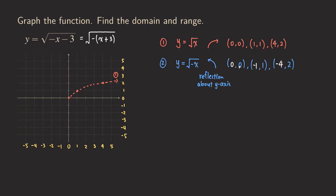If we plot those points: the same point at the origin, then negative one, one — and as you can see, negative one, one is right here. This point is mirrored to the other side of the y-axis, the same distance from the y-axis. Same thing here: four units away from the y-axis on one side, and four units away on the other side. We don't even need to write down those key points, but this shows what is actually happening when we do this horizontal reflection.